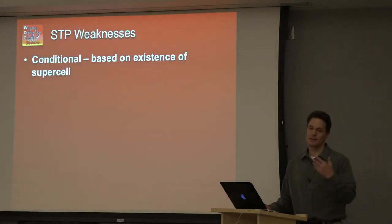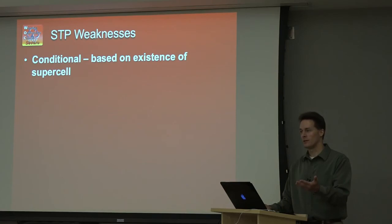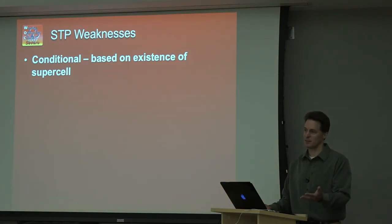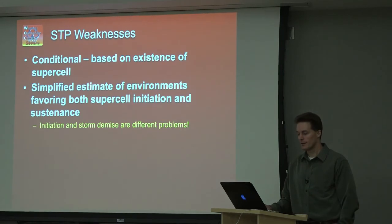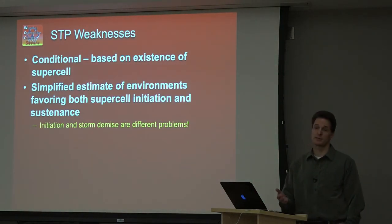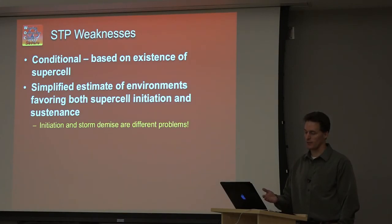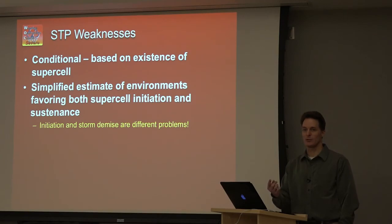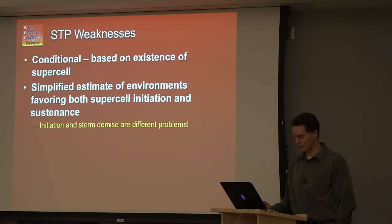There are weaknesses, just like the SCP: this is a conditional look at the problem. You have to have a supercell before any of this matters — an STP of 10 in the absence of deep convection won't produce significant tornadoes. This is also a pretty simplified estimate of storm-scale processes. Trying to estimate downdraft potential in the RFD with a single LCL height value is a very complicated problem. It's remarkable that it works as well as it does. We use it because it can actually be calculated; it just requires low-level temperature and moisture observations.